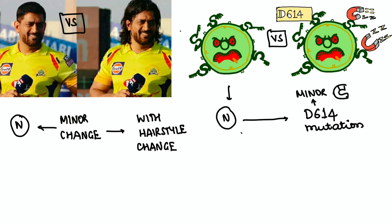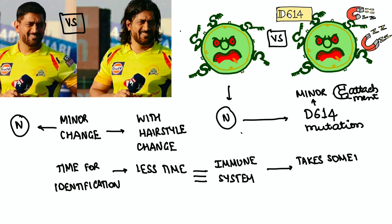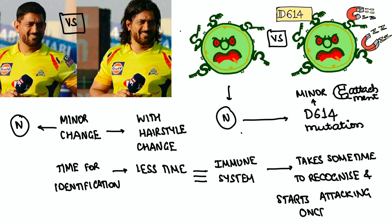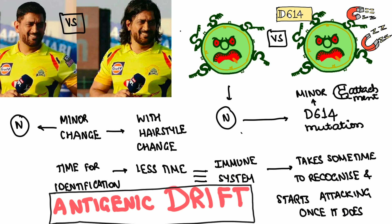How much time did you take to identify both versions of MSD? Just minimal time — you saw the picture and identified him immediately. Same thing: our immune system also takes very little time to detect these kinds of mutants. It starts producing antibodies and kills these viruses. But before the immune system identifies them, the virus attacks more and more cells, creating an epidemic. This is called antigenic drift, which is more famous among influenza viruses and is responsible for epidemics.